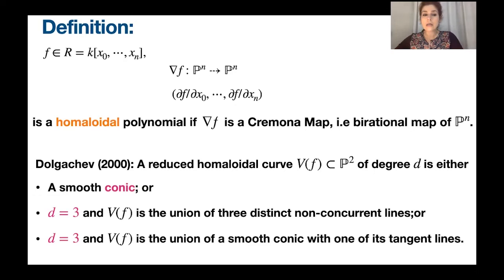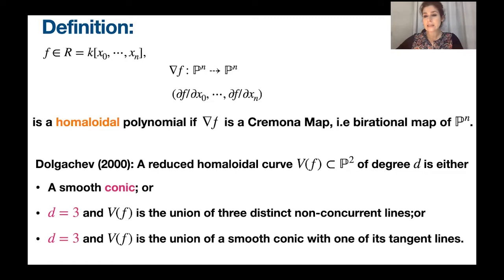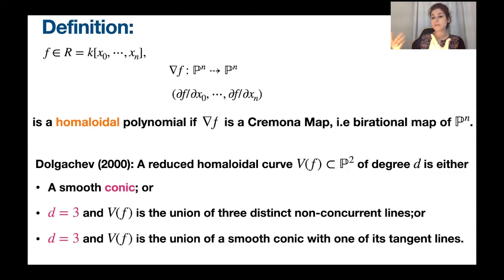We were interested to work on homoloidal polynomials in higher dimension, but instead of considering a polynomial in the general case, we thought: let's consider a polynomial that has a more structural form. The idea was to consider polynomials that come from matrices. When we work with gradient ideals in this sense, we can use lots of information from determinantal ideals, so we consider the homoloidal properties for polynomials arising from matrices.